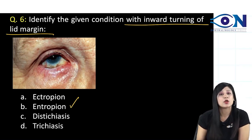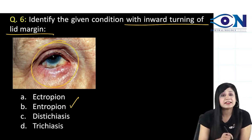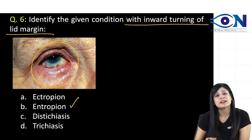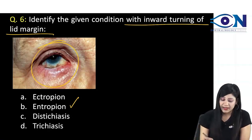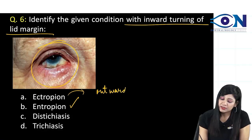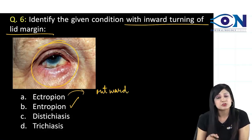Inward turning is called as entropion. So even if you are not able to identify from the image, you know that the inward turning is called as entropion. Ectropion will be the outward turning. If there is an outward turning of the lid margin, then it is ectropion.